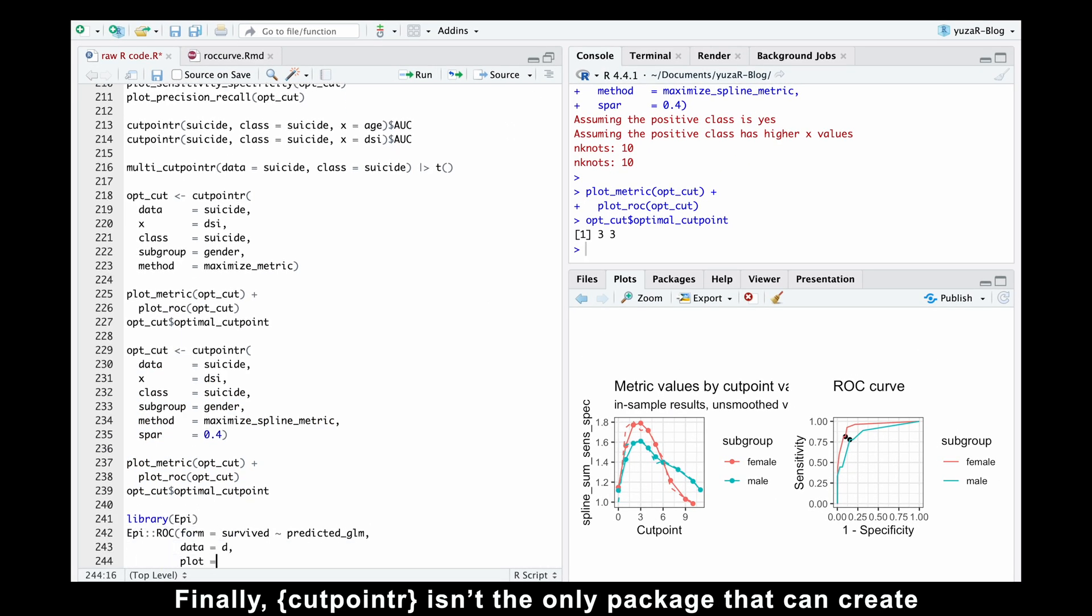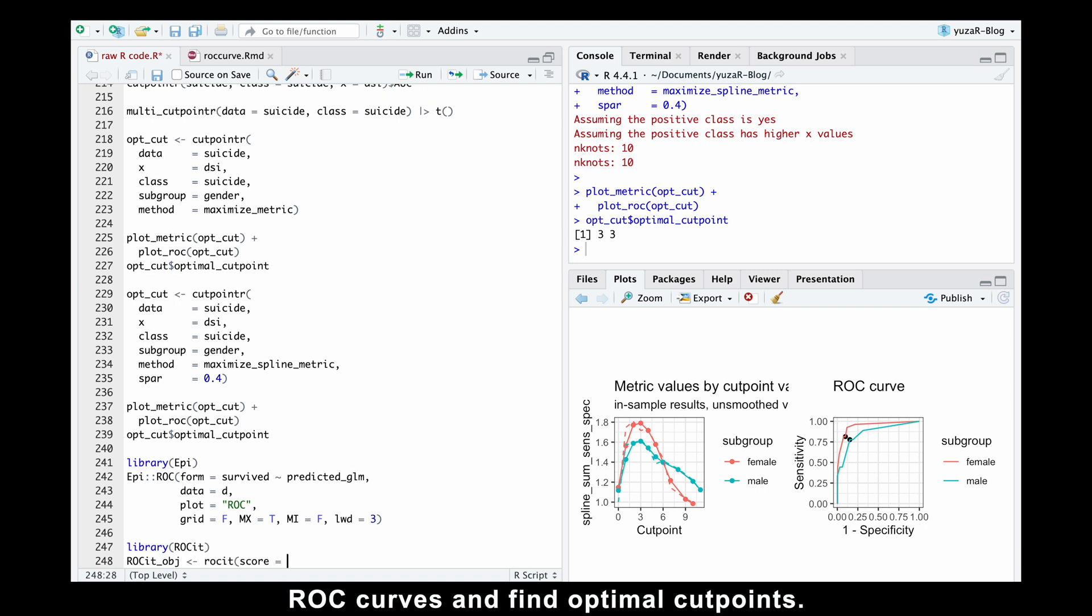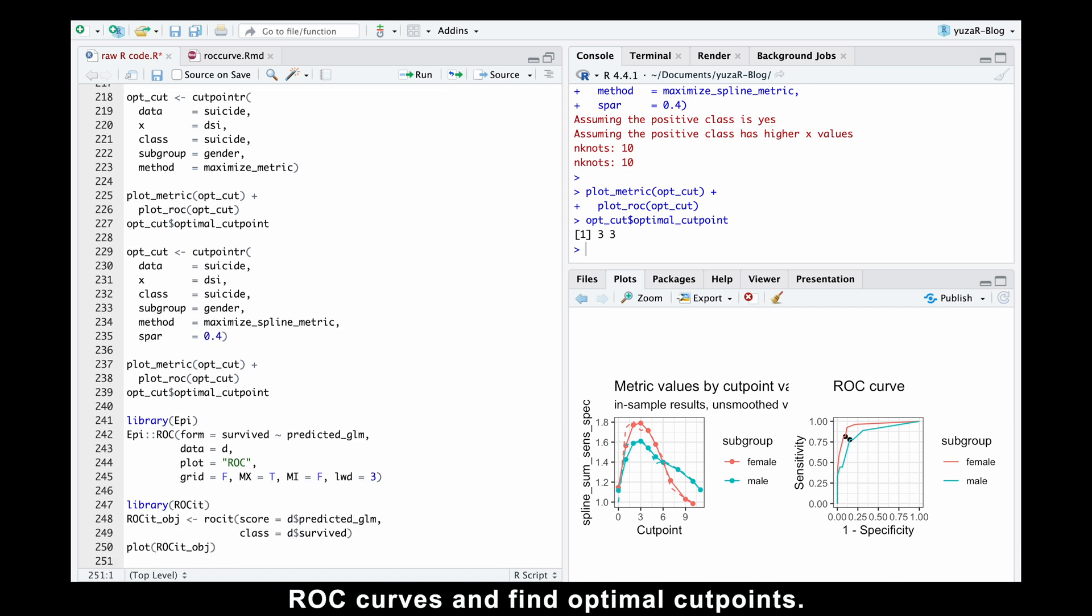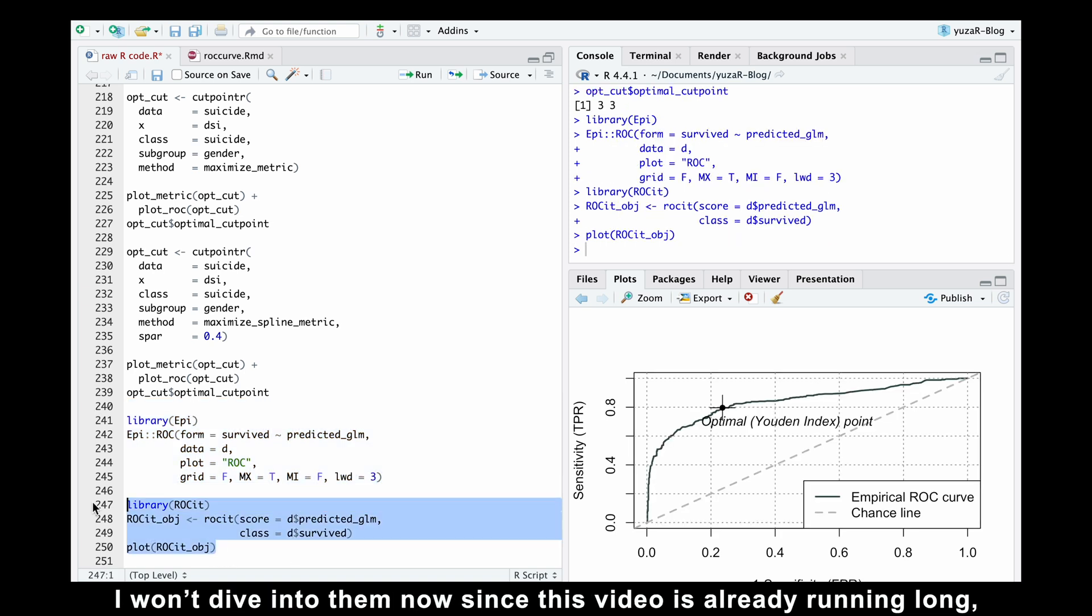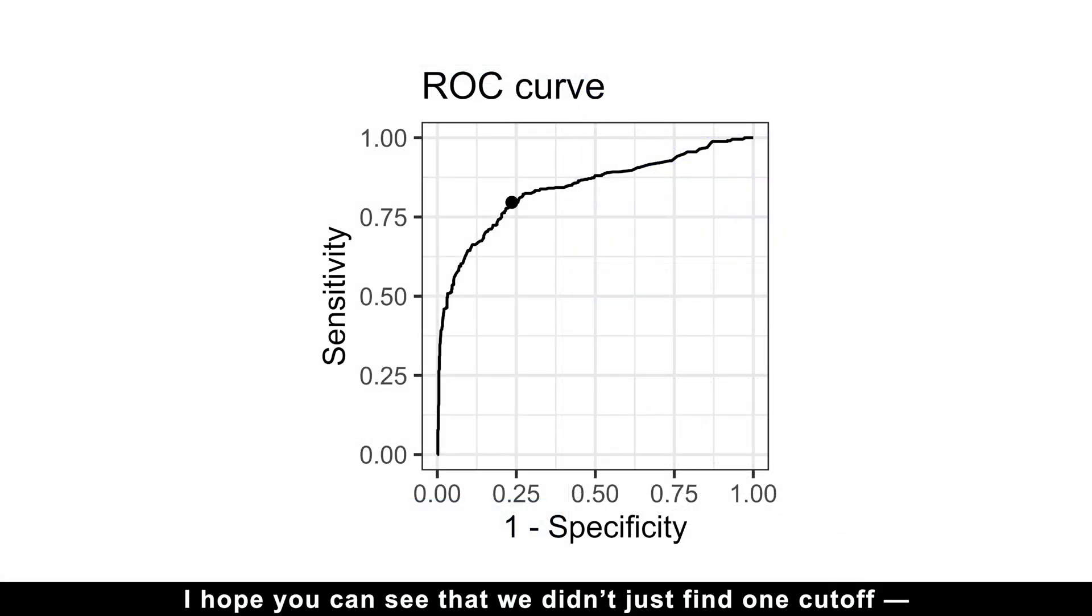Finally, cutpointr isn't the only package that can create ROC curves and find optimal cutpoints. Here is a quick look at two great alternatives: pROC and ROCR. I won't dive into them now, since this video is already running long, but they are worth checking out.